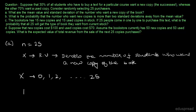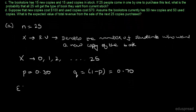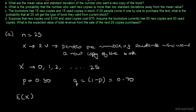In part A we have to find the mean value and standard deviation. We need to find the expected value of x, which equals n multiplied by P. With n equal to 25 and P equal to 0.30, multiplying these two values we get 7.5. So the expected value of x is 7.5.